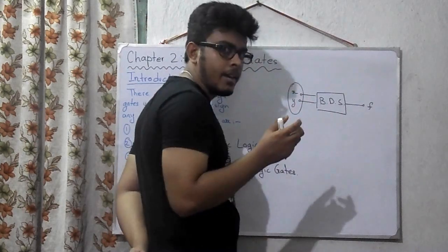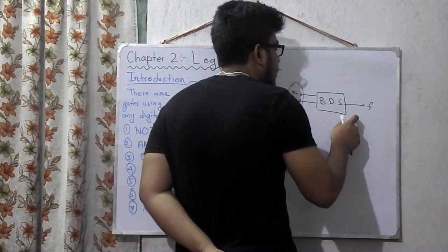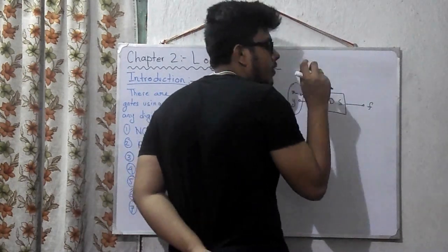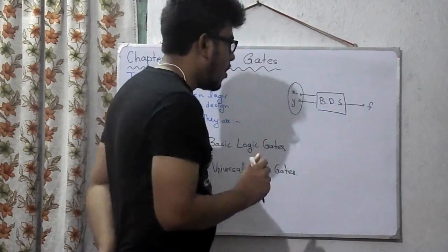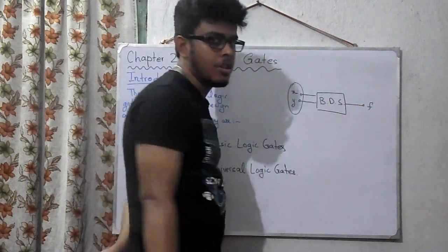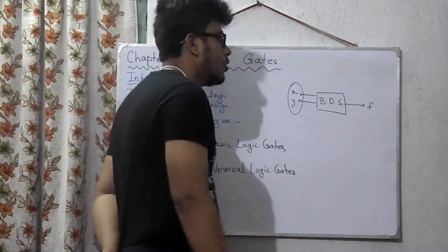Till now we were expressing the output function using the input variables. The output function that we are getting is implemented in the circuit that we are going to design. We know how to find out the output function using a truth table.